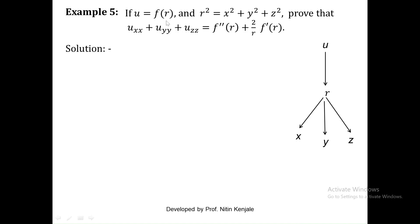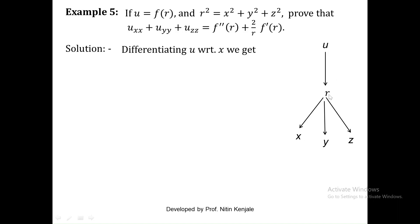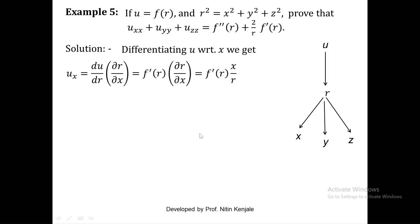Here u is defined as a function of r. So I write u as a function of r, and given that r is a function of x, y, and z, I draw arrows from r to x, y, and z. So clearly u is a function of a function. Now to find uxx we first find ux, that is the derivative of u with respect to x. So ∂u/∂x is given by du/dr into ∂r/∂x.